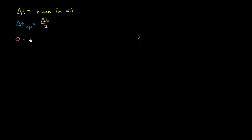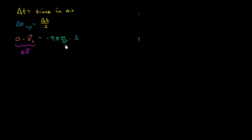So the change in velocity is 0 minus our initial velocity when it was taking off. That change in velocity is equal to the acceleration due to gravity — negative 9.8 meters per second squared — times the time that we are going up. The time up, delta t_up, is the same as our total time in the air divided by 2.